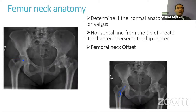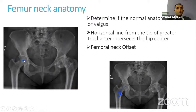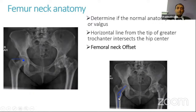Next, look for the femur neck anatomy. Sometimes it could be a significant varus or valgus type of femur neck, which we should know to plan accordingly when doing the total hip. Typically, if you draw a horizontal line from the tip of the greater trochanter towards the femoral head, that is somewhere close to the center of the hip joint. If the hip center is below this line, the femur neck is in varus; if above, it is more valgus. You can also directly measure the angle to estimate whether it is a varus or valgus neck. Femoral neck offset — also called horizontal offset — is the distance between a line drawn through the center of the femoral stem and the hip center, and the relationship between the ischial tuberosity and the lesser trochanter gives a good estimate of femoral neck offset.